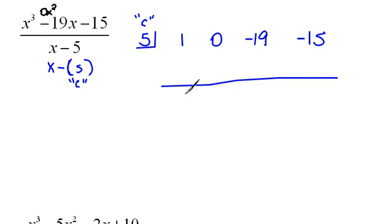So we're going to drop our first term, which would be 1. We multiply diagonally: 5 times 1 would be 5, and then we combine up and down. 0 and 5 would be 5. Now we multiply diagonally, which would be 25, and we combine up and down. -19 and 25 would be 6.